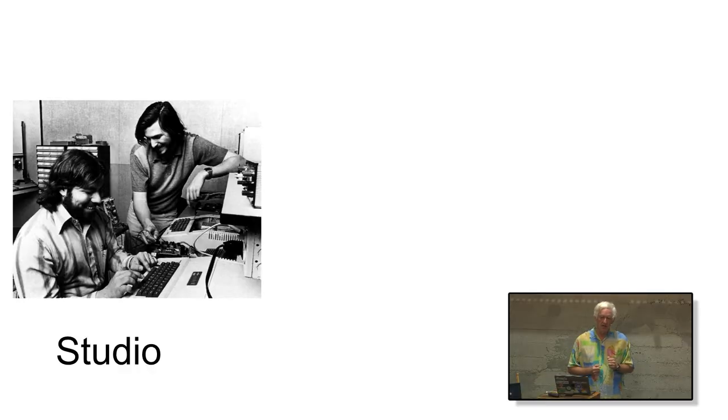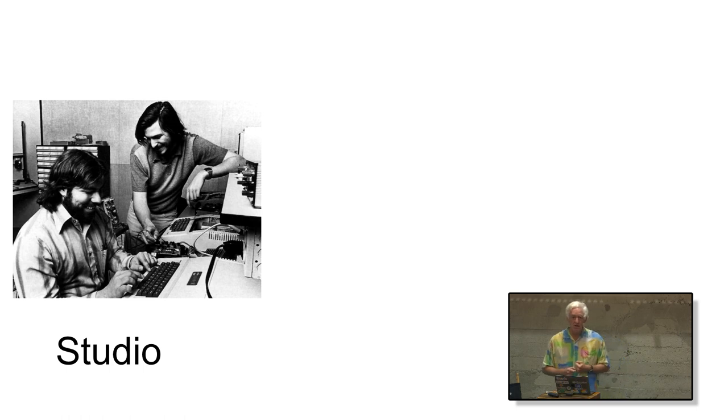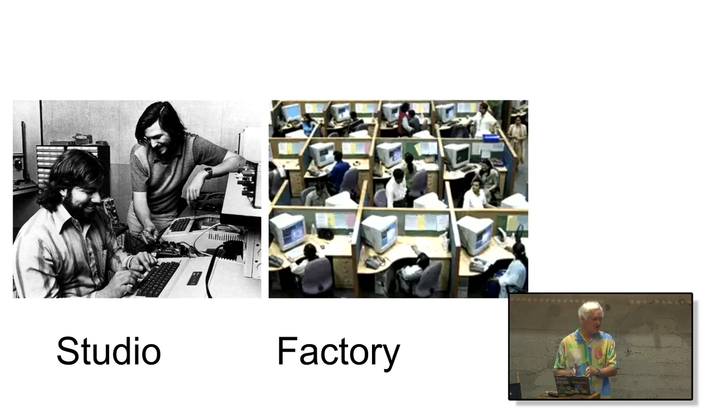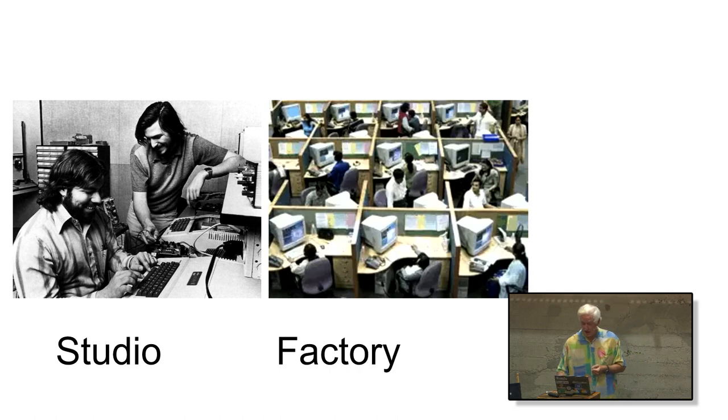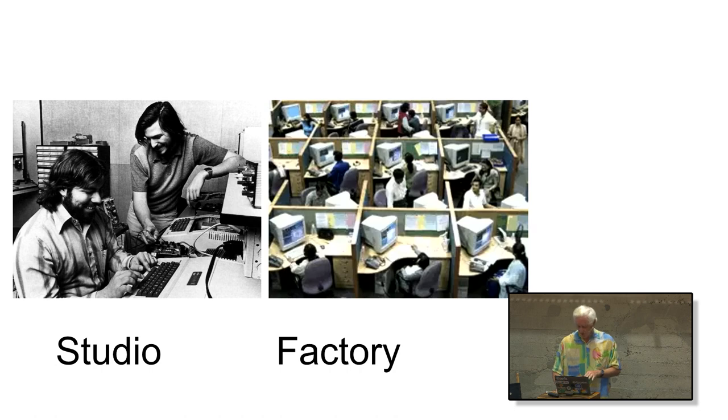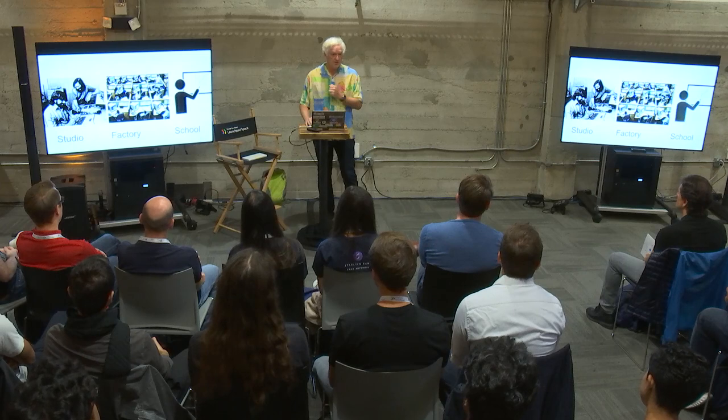We've also made progress in the methodology for how we build products. Software started as a kind of artisan field — two guys named Steve in a garage building a great company. Then we invented the factory model, where teams of thousands of engineers work together with imposed discipline and methodology built up over half a century. Now we're saying maybe we don't need that factory model — maybe it's more like a school model, where teachers teach the computers what to do, and we need a new methodology for that.